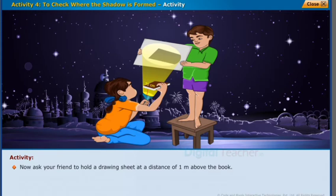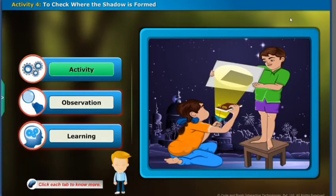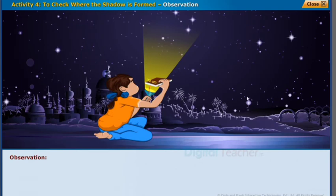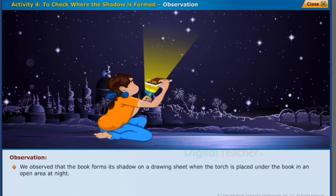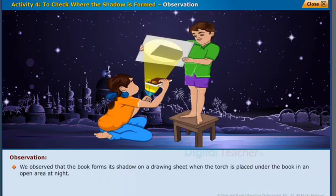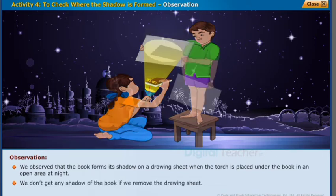Now ask your friend to hold a drawing sheet at a distance of 1 meter above the book. Observe the shadow of the book. We observed that the book forms a shadow on the drawing sheet when the torch is placed under the book in an open area at night.